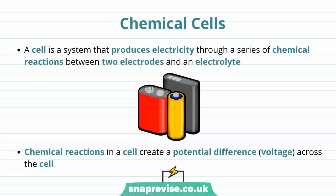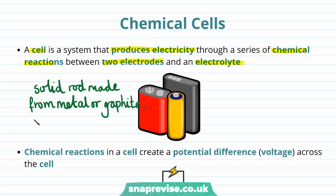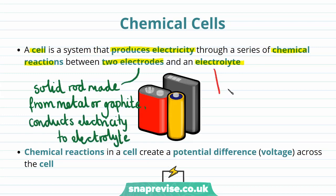In chemistry and physics we use the word 'cell' differently to in biology. When we talk about cells we're talking about a system that produces electricity, specifically through a series of chemical reactions taking place between two electrodes and an electrolyte. An electrode is a solid rod made from metal or graphite that conducts electricity to the electrolyte, and an electrolyte is a compound in its liquid state or in solution which contains mobile ions and conducts electricity.